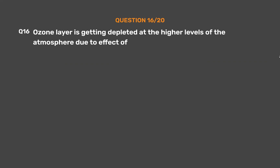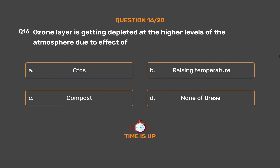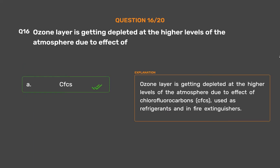Question number 16: Ozone layer is getting depleted at the higher levels of the atmosphere due to the effect of — Option A: CFCs, Option B: Raising temperature, Option C: Compost, Option D: None of these. The correct answer is Option A. Ozone layer is getting depleted due to the effect of chlorofluorocarbons (CFCs), used as refrigerants and in fire extinguishers.